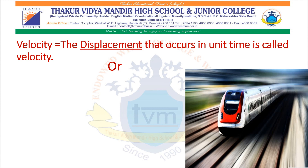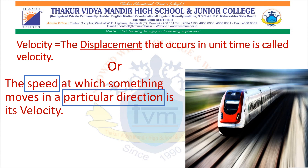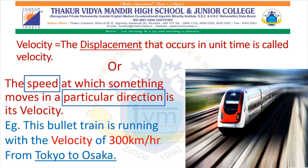Velocity is basically the speed at which something moves in a particular direction, or we can say velocity is displacement over a period of time. In this example, the speed of this bullet train is 300 km per hour, but besides that speed, the direction is also mentioned — that is Tokyo to Osaka. So remember, velocity is speed with direction.